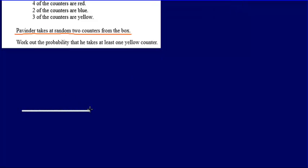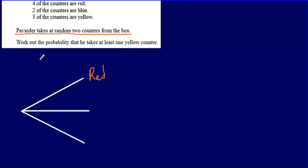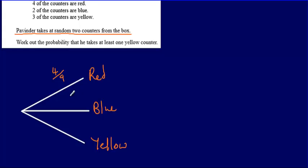Because there are three things that could potentially happen, the tree diagram needs three branches. On his first selection, Pervinda could choose a red, a blue, or a yellow. The probability of choosing a red is four ninths, the probability of choosing a blue is two ninths, and the probability of choosing a yellow is three ninths.